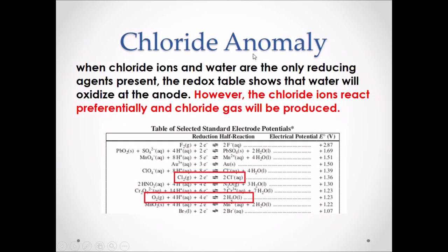The chloride anomaly. When chloride ions and water are the only reducing agents present, the redox table shows that water would oxidize at the anode. However, the anomaly is that chloride ions will react preferably and chlorine gas will be produced. Looking at the Chemistry 30 data booklet, we start from the bottom of the table moving upwards to find the strongest reducing agent. Water would normally be selected, but the chloride anomaly states that chloride ions will be stronger than water and will react first, producing Cl₂ gas and two electrons.